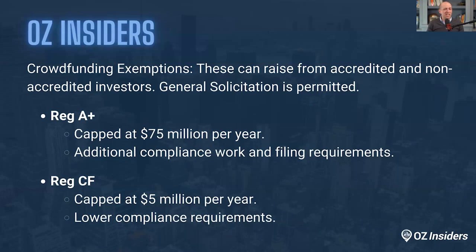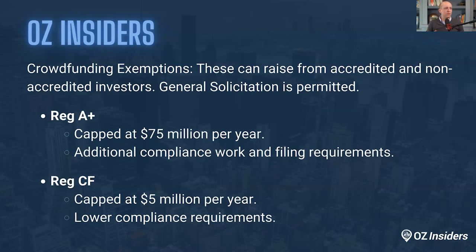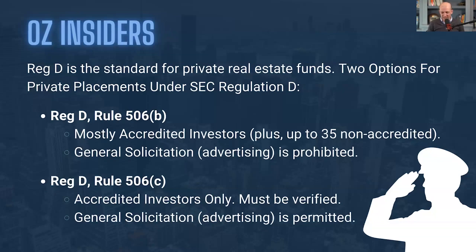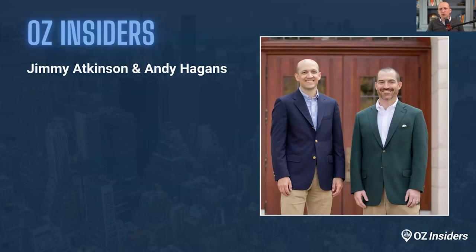Two other types of filings I've seen very sparingly: Reg A+ and Reg CF. These crowdfunding exemptions can raise from both accredited and non-accredited investors, and general solicitation is permitted for both. However, Reg CF is capped at $5 million raising per year. Reg A+ is probably more trouble than it's worth given additional compliance work and filing requirements. All I know is Reg D is the gold standard for private real estate funds — talk with your securities attorney before making that decision.